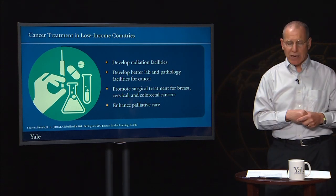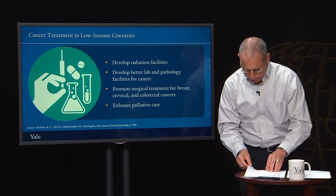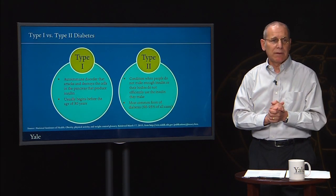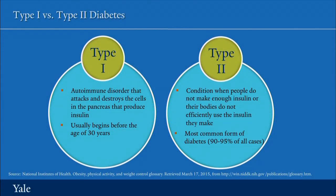Let's move on now and talk about diabetes. There are two kinds of diabetes: type 1 and type 2. Type 1 is an autoimmune disorder that attacks and destroys the cells in the pancreas that produce insulin, and usually begins at relatively earlier ages. Type 2 is a condition when people do not make enough insulin, or their bodies do not efficiently use the insulin they make. This is the most common form of diabetes globally.